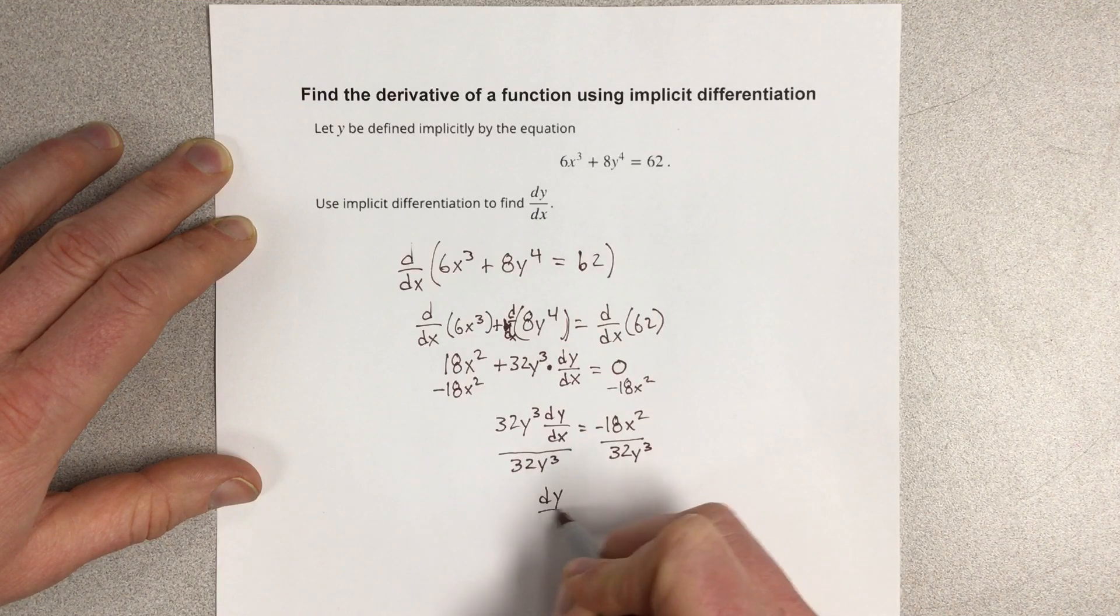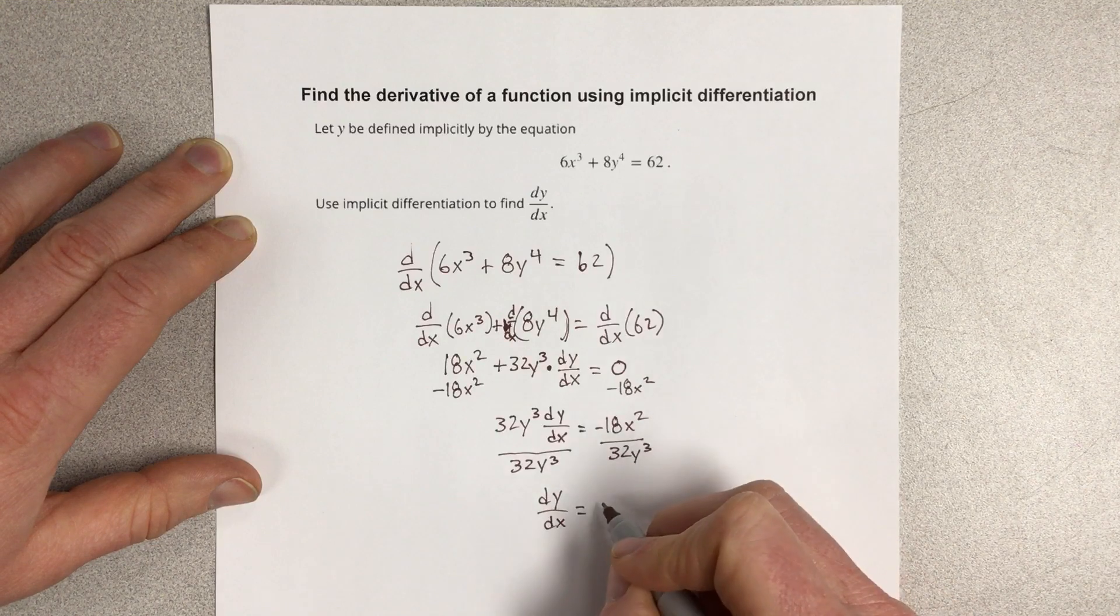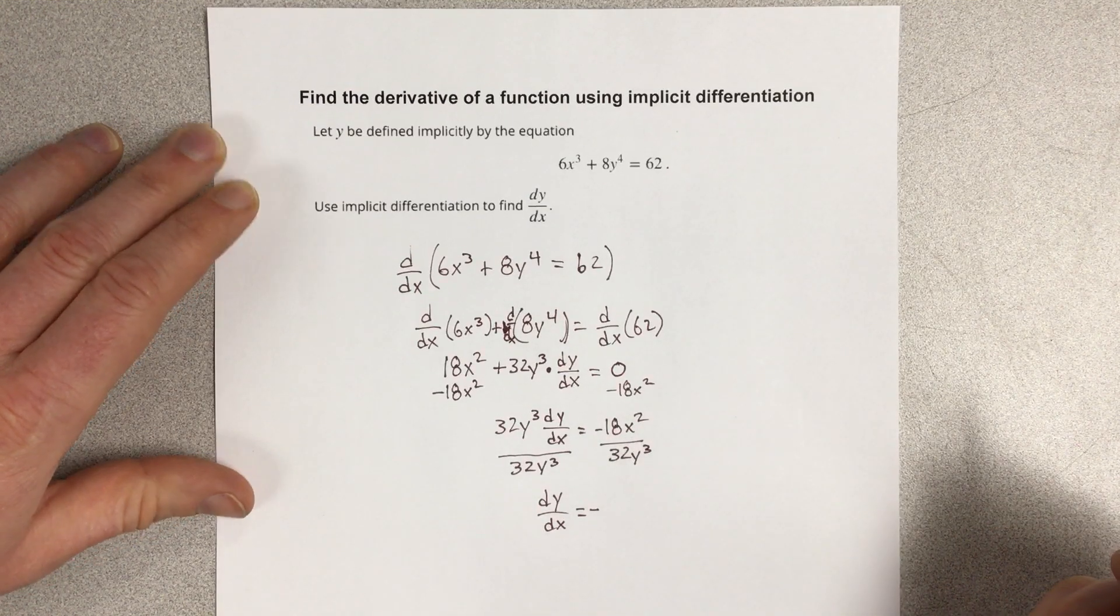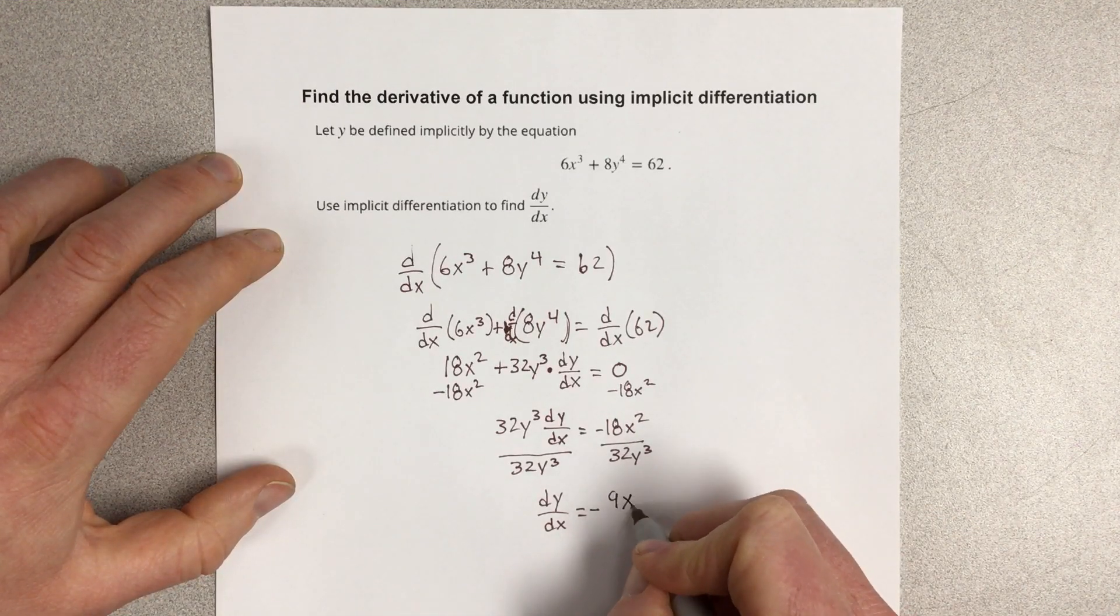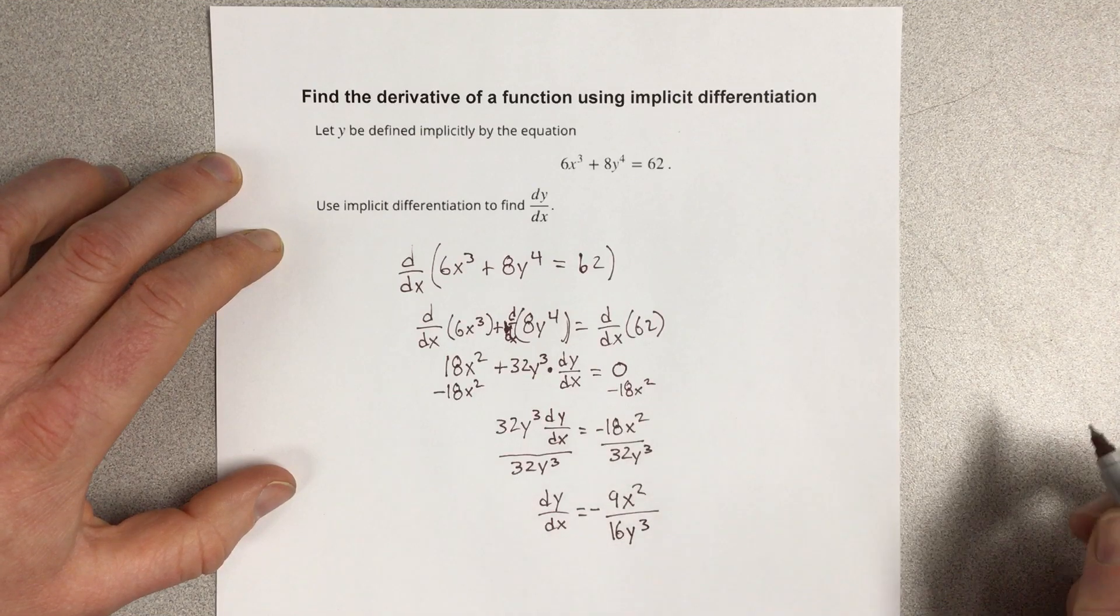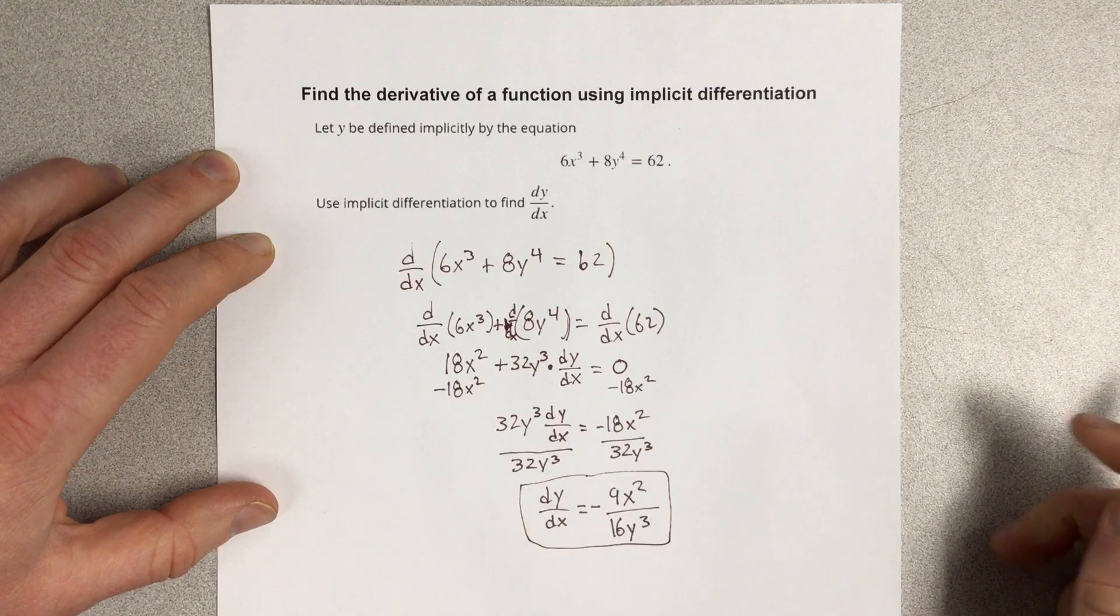And we end up with dy/dx equals negative... We could reduce this fraction. Divide them both by 2. So we'd have 9x² over 16y³. And this is the derivative of the above function.